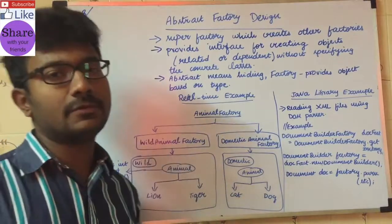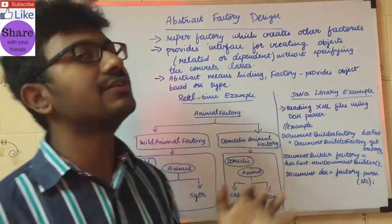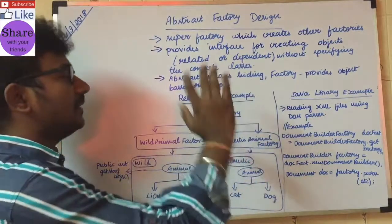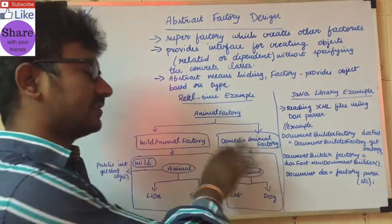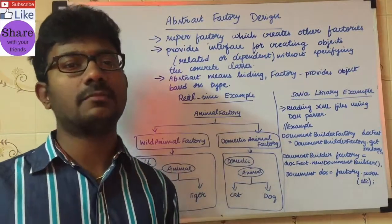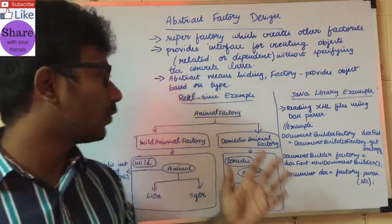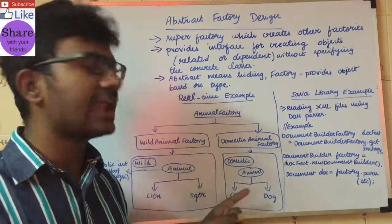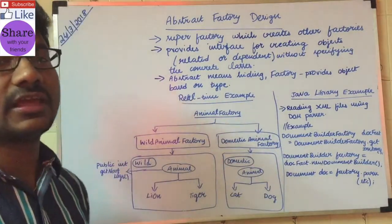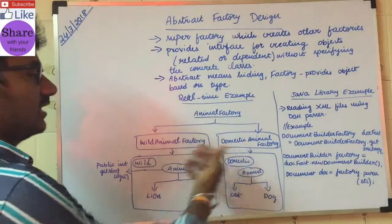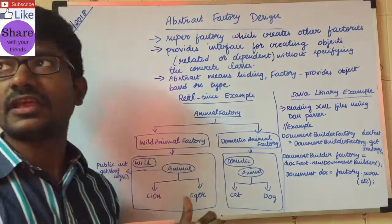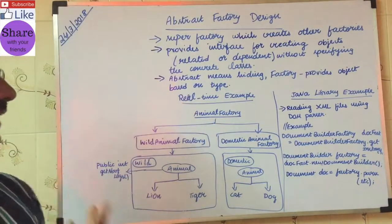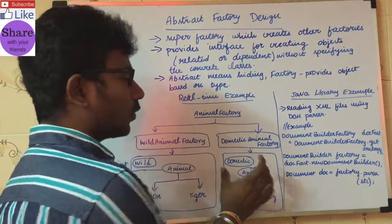Let's look at a real-time example to explain the Abstract Factory Design Pattern. We have an Animal Factory. Animals are divided into two basic categories: domestic animals and wild animals. Domestic animals include cat and dog. Wild animals include lion, tiger, and others. The Animal is an interface.